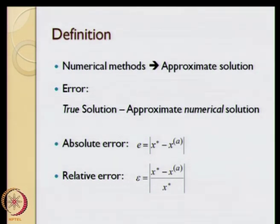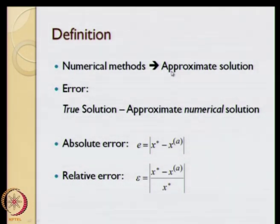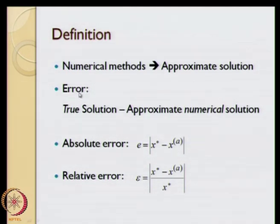What is the definition of errors? As we had seen in the introduction module, numerical methods will lead to approximate solutions. What that means is that the solution will differ from the actual value of the solution. The difference between the true solution and the approximate numerical solution is what we call the error. There are various reasons why these errors come about.